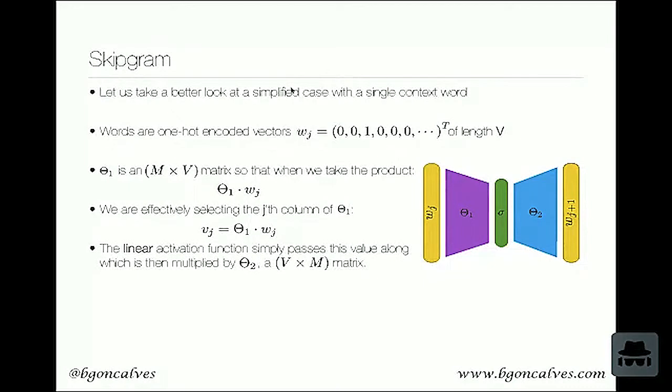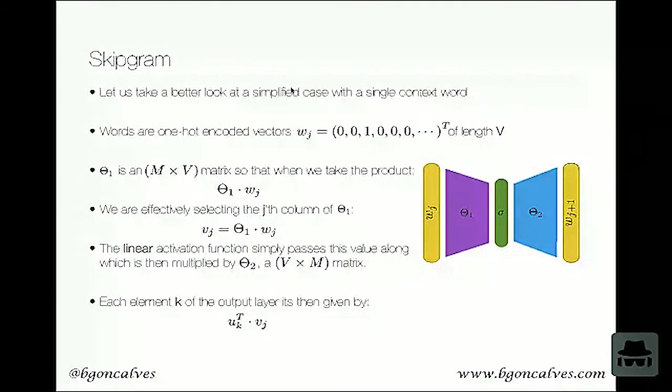It's basically the number of words. And so when we take this product of theta-1 times w_j, you're basically selecting the j-th column of theta-1. And this will be basically the input we're giving with this embedded word. Not anymore this long vector of ones and zeros of length V, but now this much shorter vector of dimension M. And then since we have a linear activation function, let's just move it along. And then at the next step, what we're doing is we're multiplying this by theta-2, which is a V times M matrix. So when we multiply it, we get back a large V dimensional vector.